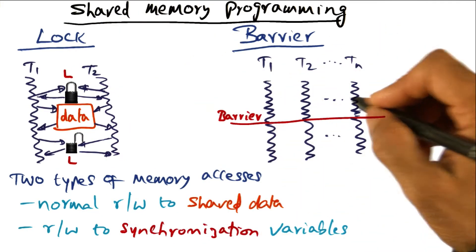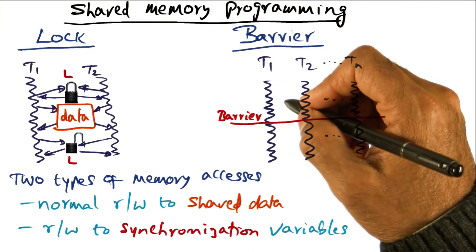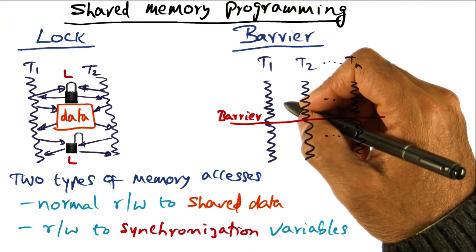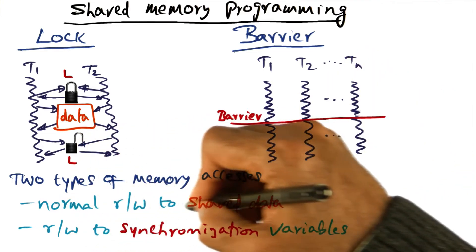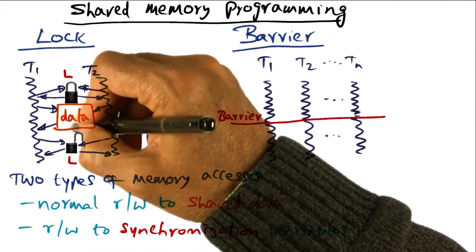Now the upshot is, if you're writing a shared memory program, there are two types of memory accesses that are going to happen. One type of memory access is the normal reads and writes to shared data